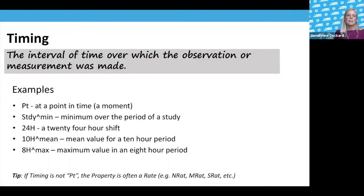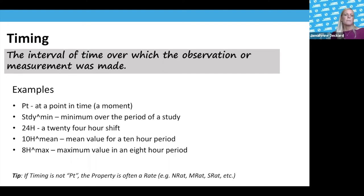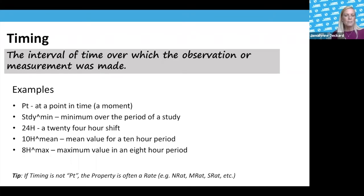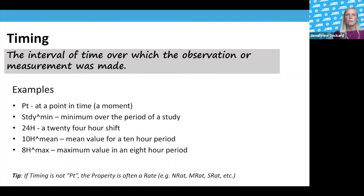Timing is our third axis, representing the interval of time over which an observation was made. Point in time is most common — almost all drawn specimens are done at a random point in time. We also have 24-hour urine specimens, the minimum over a study period, mean over a 10-hour time period, or maximum over an 8-hour time. The minimum, mean, and maximum types are more common in clinical settings like survey instruments. In lab, you most commonly see point in time or 24-hour timings.